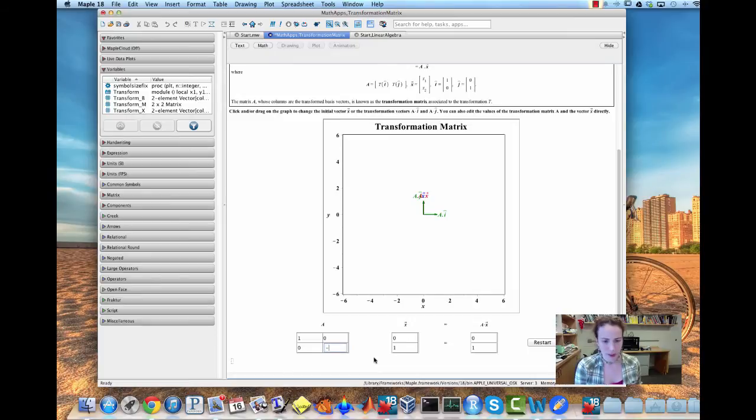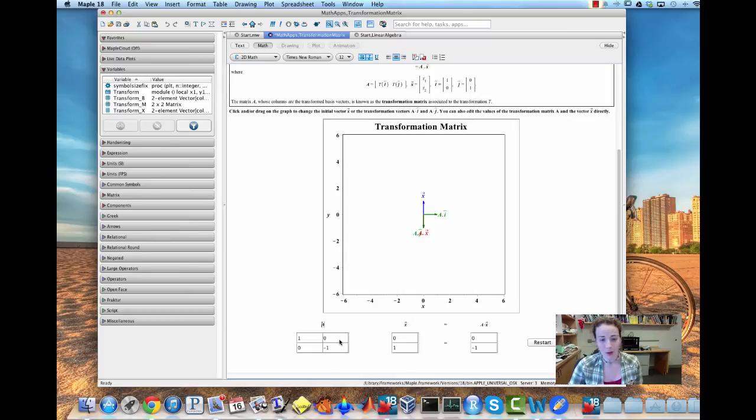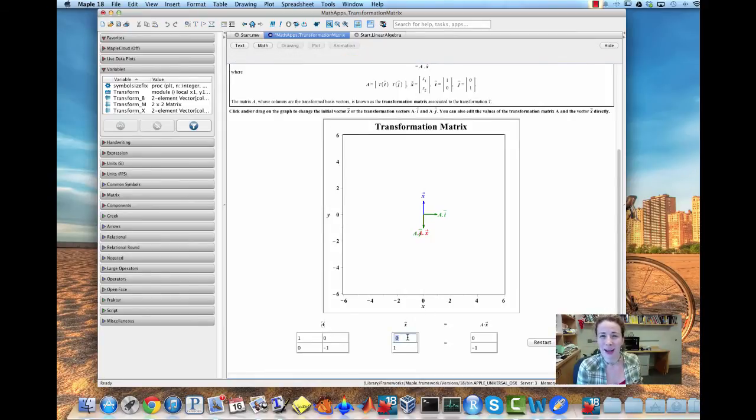If instead of looking at the matrix that sends vectors back to themselves, we changed our one along this axis, we get something called a reflection matrix where we've reflected our y-coordinate across the line y equals 0.